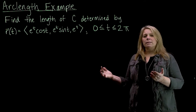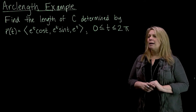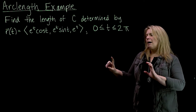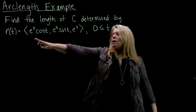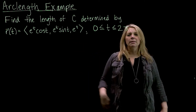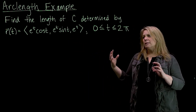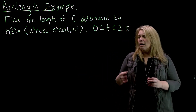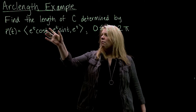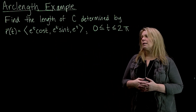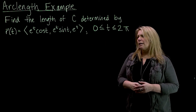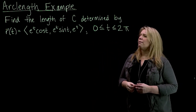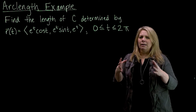We don't necessarily need to think about what this graph looks like in order to calculate arc length, but maybe it's not a bad idea. We've done examples where we had a constant times cosine and a constant times sine in some of the components, and we know that we get rotation around a cylinder. Similar idea here, but because I don't have a constant, we're not going to have a constant radius, so we should expect oscillations in the x and y direction — some rotation in the x and y direction.